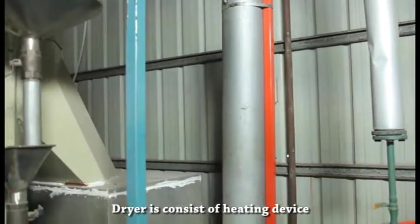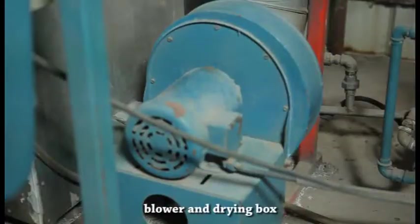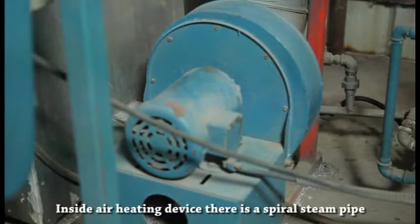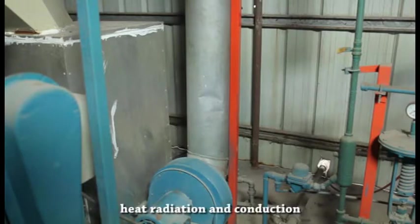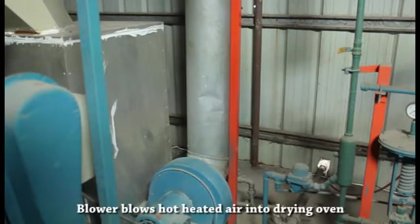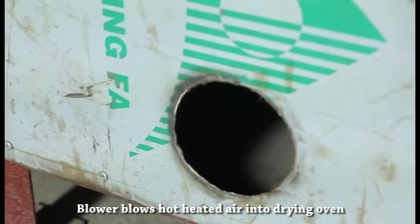The dryer consists of heating device, blower, and dryer box. Inside the air heating device there is a spiral steam pipe. Normal temperature air is heated by heat radiation and conduction. The blower blows heated air into the drying oven.